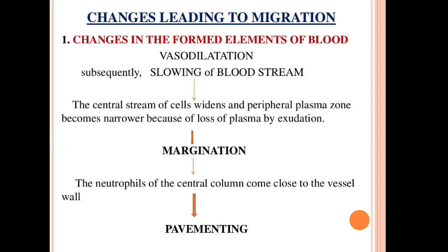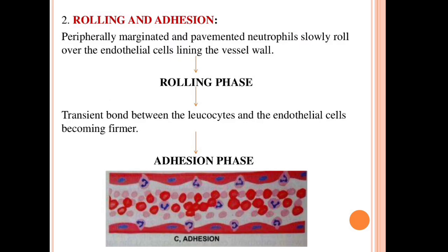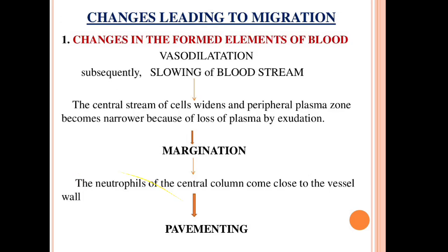The changes leading to migration begin with changes in the formed elements of blood: vasodilation and slowing of the bloodstream. This is followed by margination, pavementing, rolling phase, and adhesion phase. The central stream of cells widens and the peripheral plasma zone becomes narrower due to plasma exudation, leading to margination of leukocytes to the vessel wall.